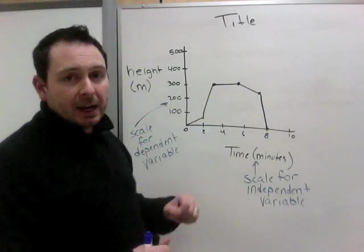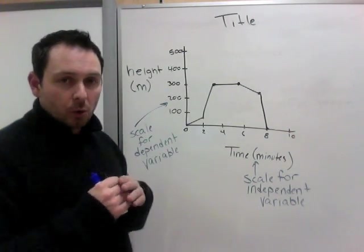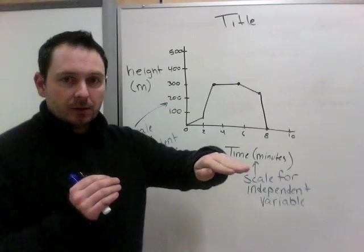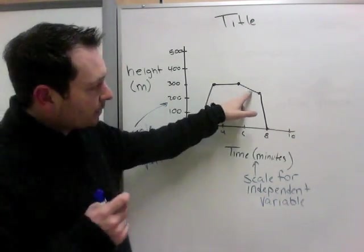So when it's remaining at the same height, it could mean two things. It is either hovering, or it's flying along the same plane. It's not going up or down. And then it starts going down a little bit.